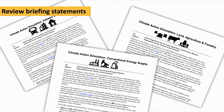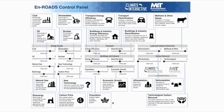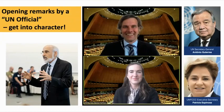Another way to help participants get into their roles is through briefing statements. On the Climate Interactive website you'll find briefing statements for each of the different groups, which people can read to understand the interests of the groups they're representing. We also have an En-ROADS control panel guide that can help people get oriented to all the different sectors and sliders available within En-ROADS.